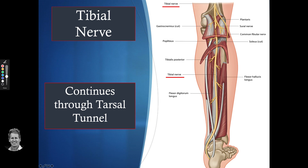The tibial nerve continues through the tarsal tunnel. There is a mnemonic for that area — 'Tom, Dick, and Very Nervous Harry': Tom is tibialis posterior, Dick is flexor digitorum, Harry is flexor hallucis longus; 'Very Nervous' adds the artery, nerve, and vein in anatomical order.